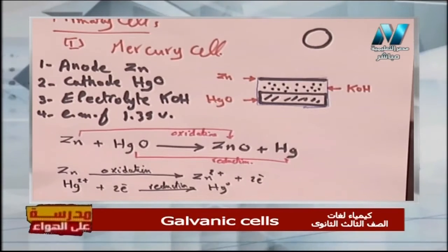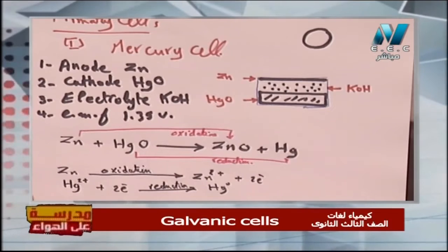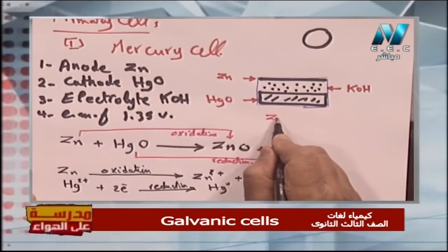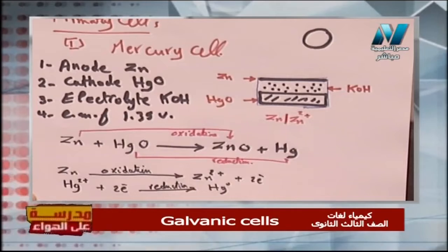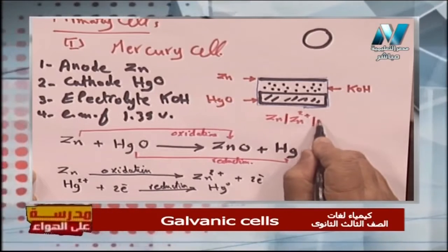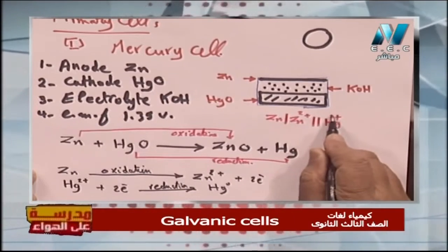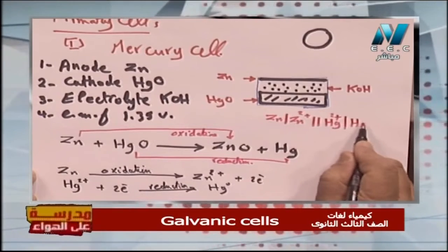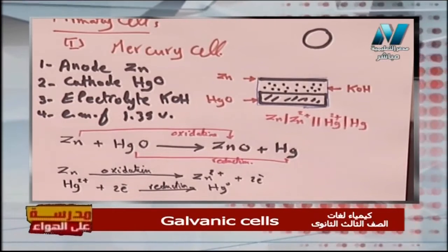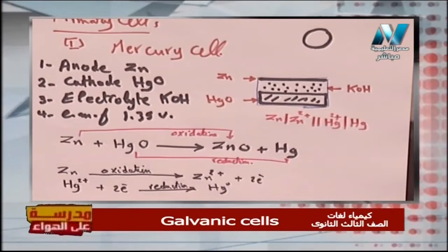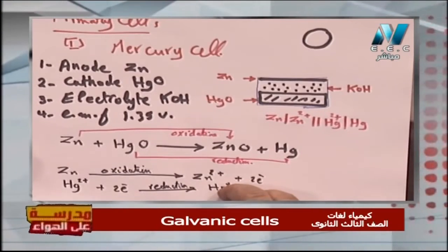If we draw the galvanic cell for the mercury cell: Zn at the anode is converted to Zn²⁺, connected via a salt bridge, and Hg²⁺ is converted to Hg at the cathode. This is the first example of a primary cell — the mercury cell. Now let's take the fuel cell.